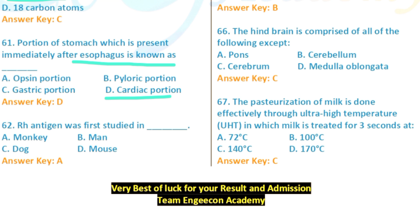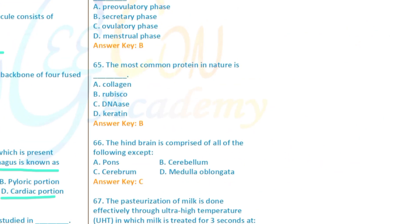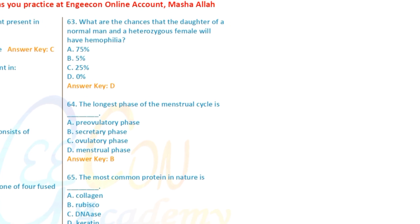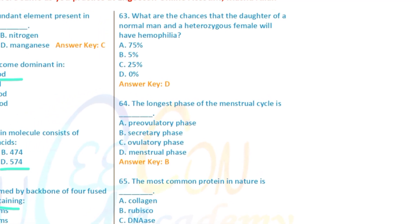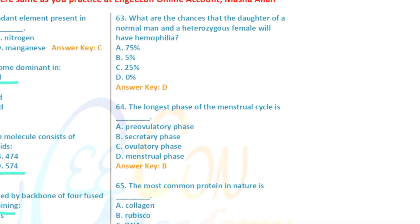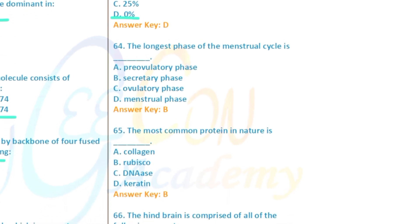The Rh antigen was discovered by Landsteiner. Question: What are the chances that daughters of a normal man and a carrier (heterozygous) female will have hemophilia? The chances are zero percent — daughters will not have hemophilia. Question 64: The longest phase of the menstrual cycle.